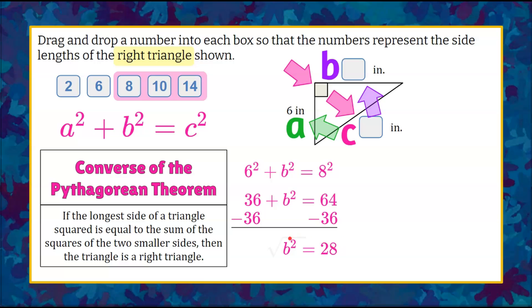To solve for B, we're going to take the square root of each side. The square root of B squared is B. The square root of 28 is not a perfect square. So therefore, we know that we can eliminate choice 8 for side C, the hypotenuse. So now the hypotenuse C could either be the values 10 or 14 from our choices.